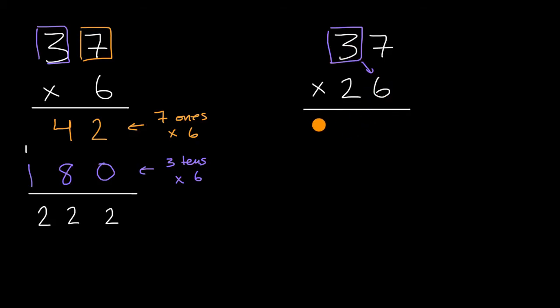30 sixes is 180, so that's three tens times six. Then we think about the seven ones times six, which is 42—that's the seven ones times six, or seven sixes.